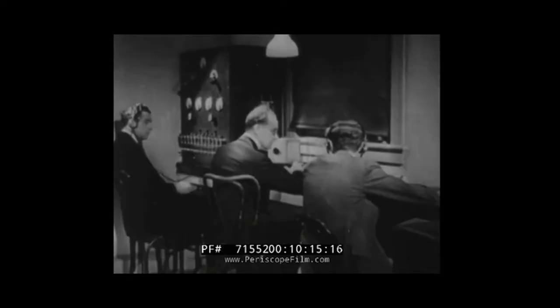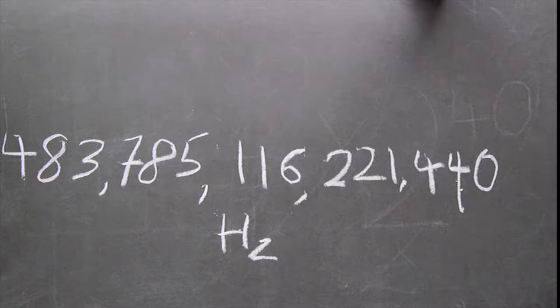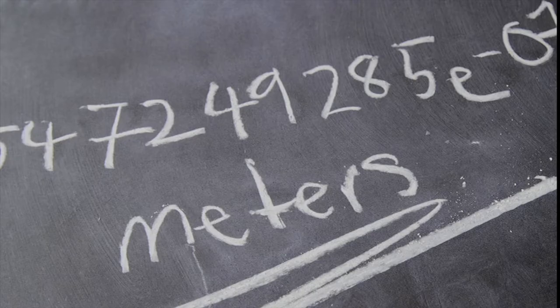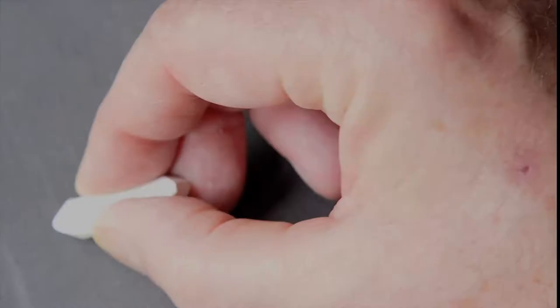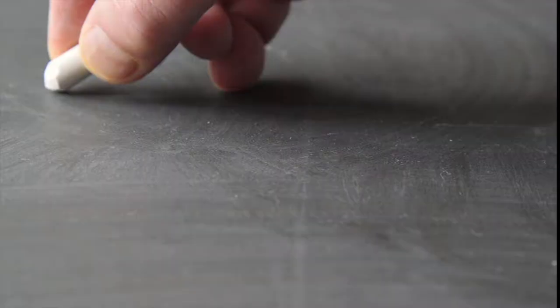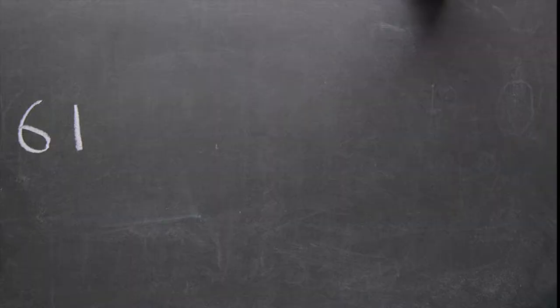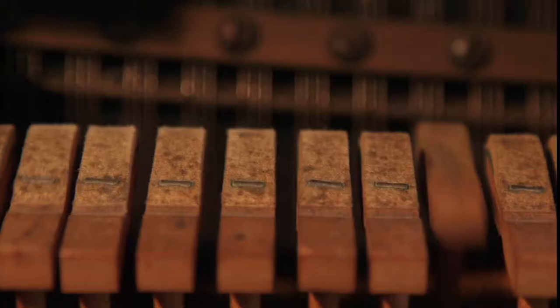So to convert it to wavelength, you divide the speed of light by the light frequency. This gives you a number equivalent to 6195.4725 angstroms, which lies in the orange area of the visible spectrum. So the note A is equivalent to the colour orange.